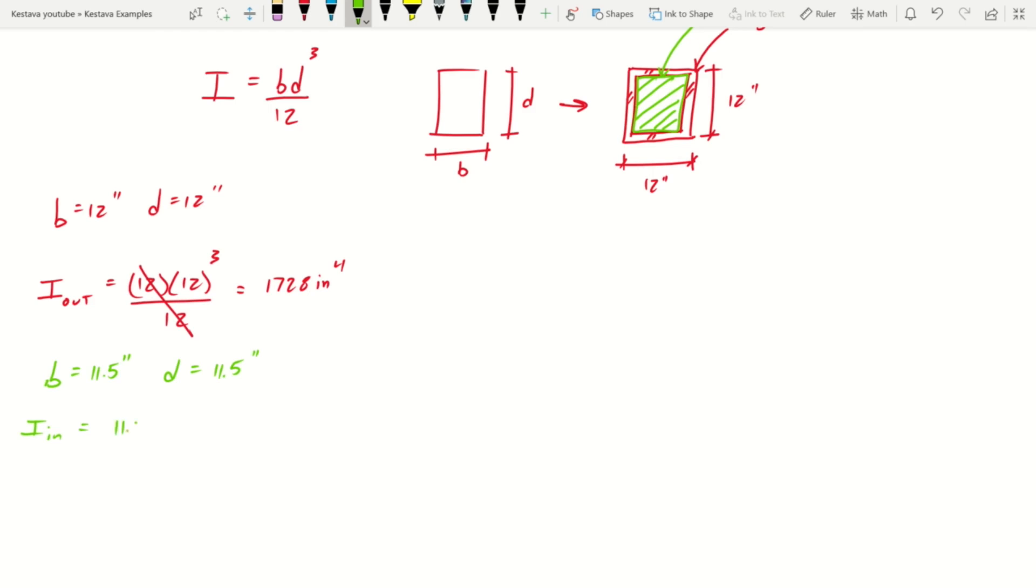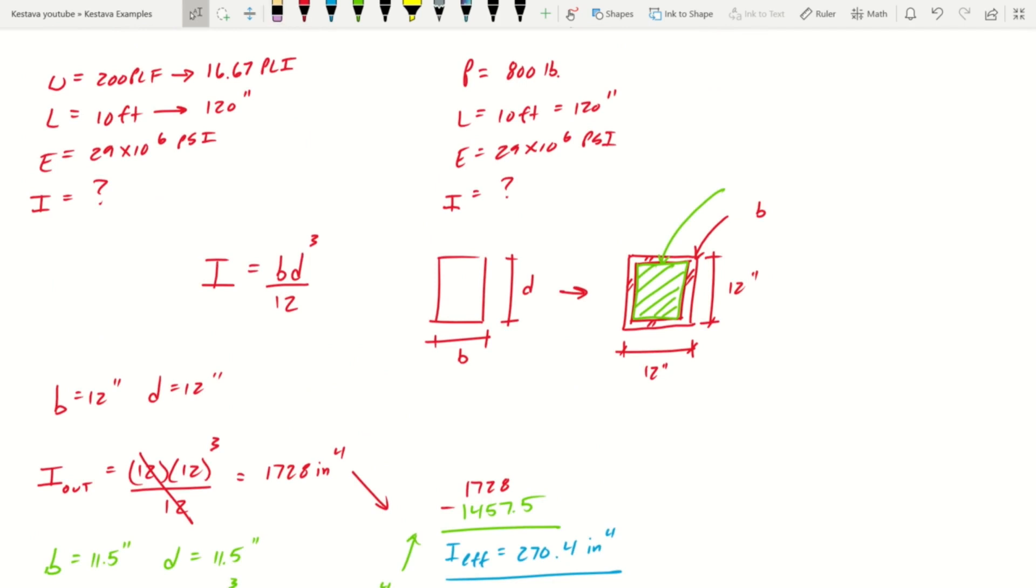So our I inner is going to equal 11.5 times 11.5 to the third over 12. That gets us 1457.5 inches to the fourth. Now if we bring these together and subtract them, that gets us I effective equal to 270.4 inches to the fourth.